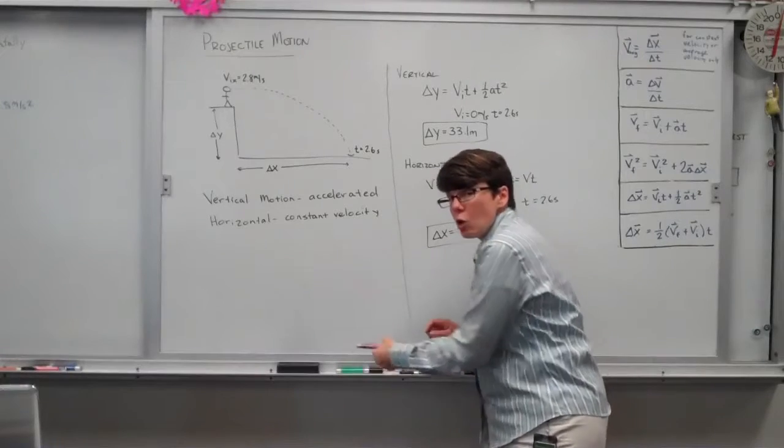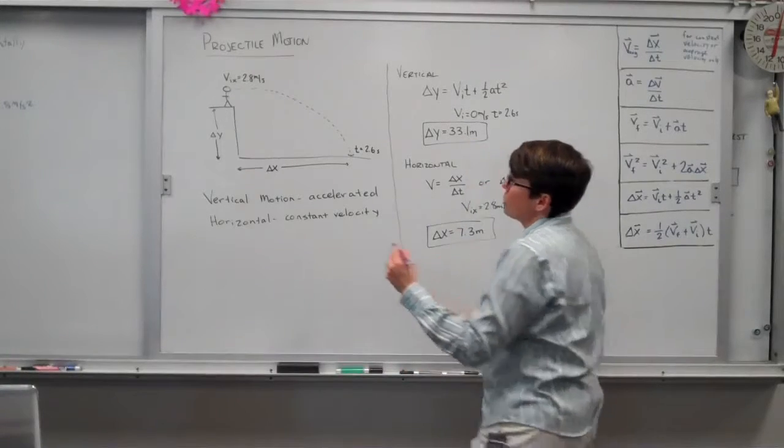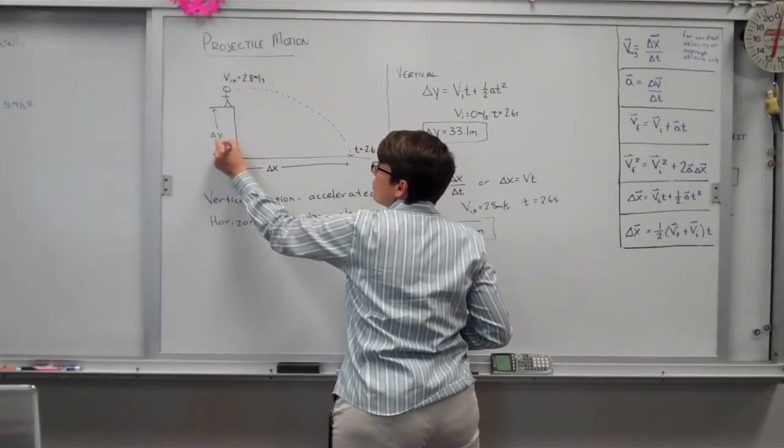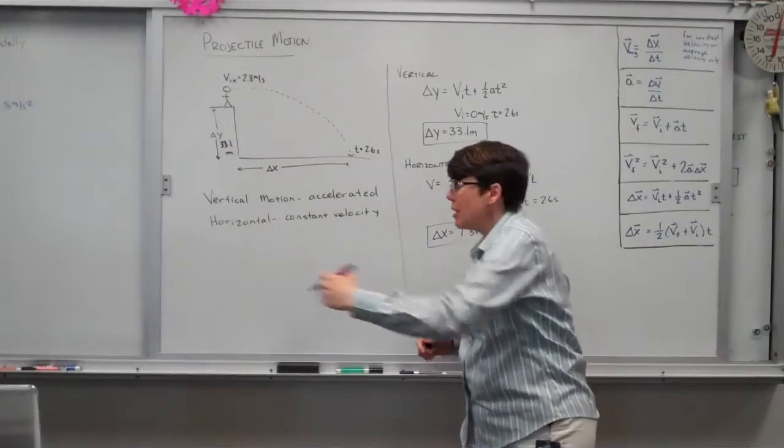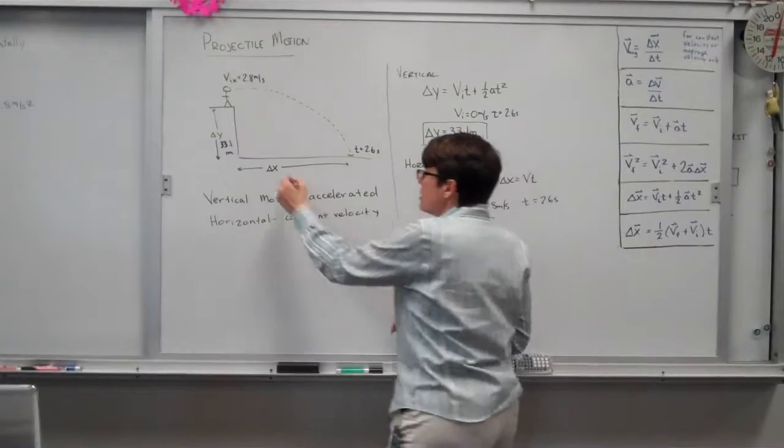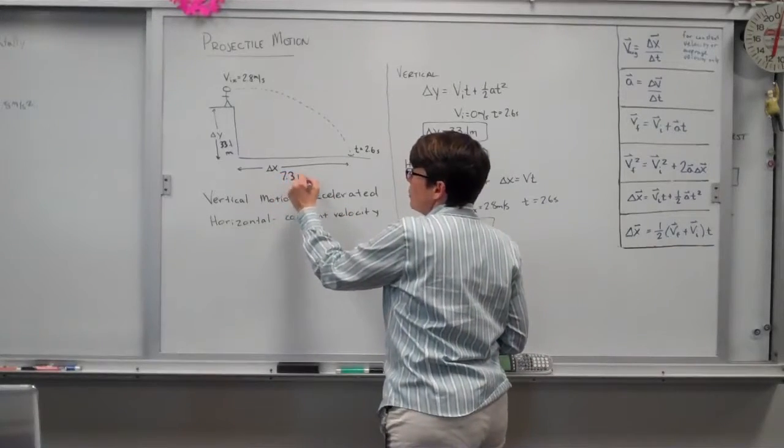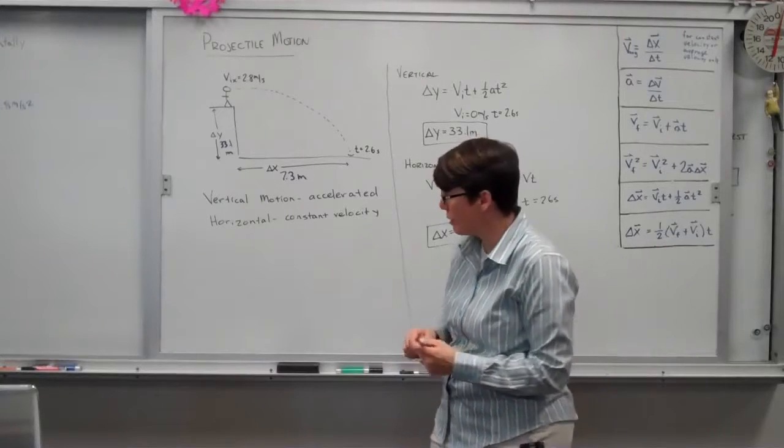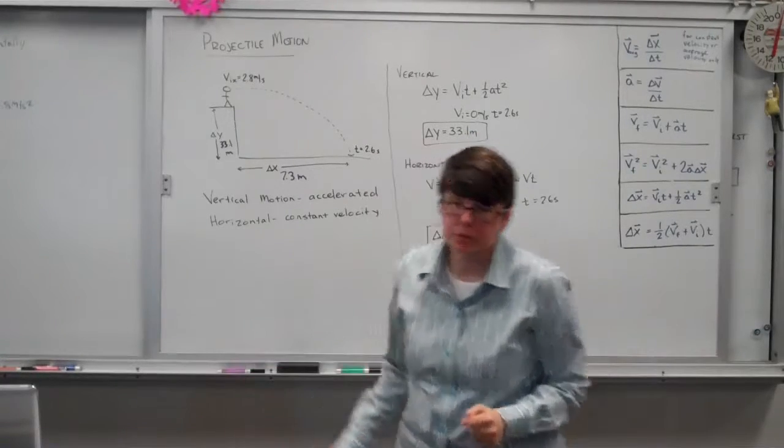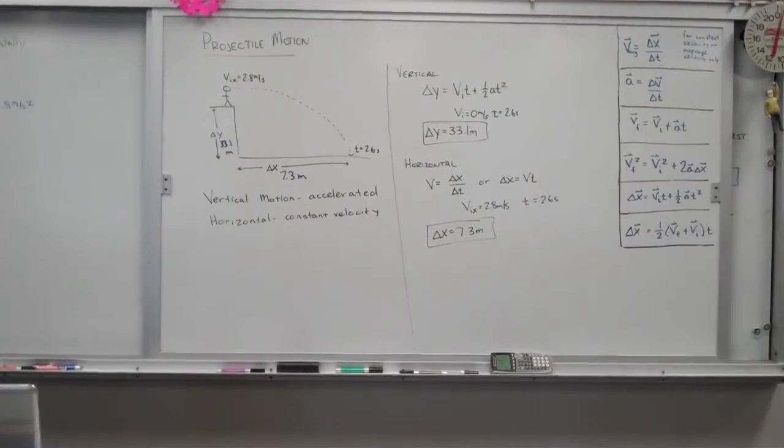The question asks how tall is the diving board? We answered that earlier, 33.1 meters. How far out from the base of the diving board until you strike the water? 7.3 meters. Looks like my drawing is not at all to scale and that's a ridiculously high diving board.